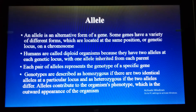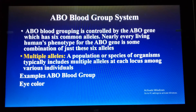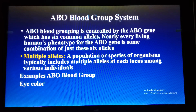Homozygous may be dominant or recessive. If it is heterozygous, one allele is dominant over the other. This is just a brief recall before discussing the genetic basis of the ABO blood group system. The ABO blood group system is basically controlled by genes A and B — the A gene gives rise to the A antigen, the B gene is responsible for the B antigen, and if O, there is no antigen A and no antigen B.